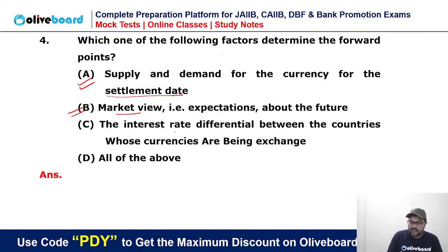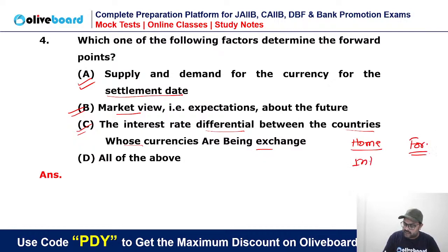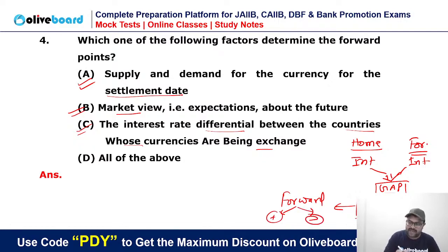The interest rate differential between the countries is also very important. In any economy, currency rising or falling depends on the home country and foreign country interest rate gap. Because of this gap, a process called arbitrage is played, and because of arbitrage, forward points will either be positive or negative. So yes, A, B, and C — all three factors are important. Therefore D is the correct answer.